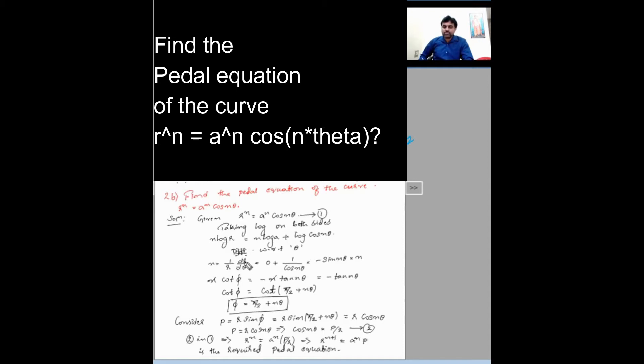Derivative of log r is n into 1/r dr/dθ. Here n log a is constant. Derivative of that constant term is 0, plus log function derivative is 1/(cos n theta) into derivative of cos is minus sine n theta into...